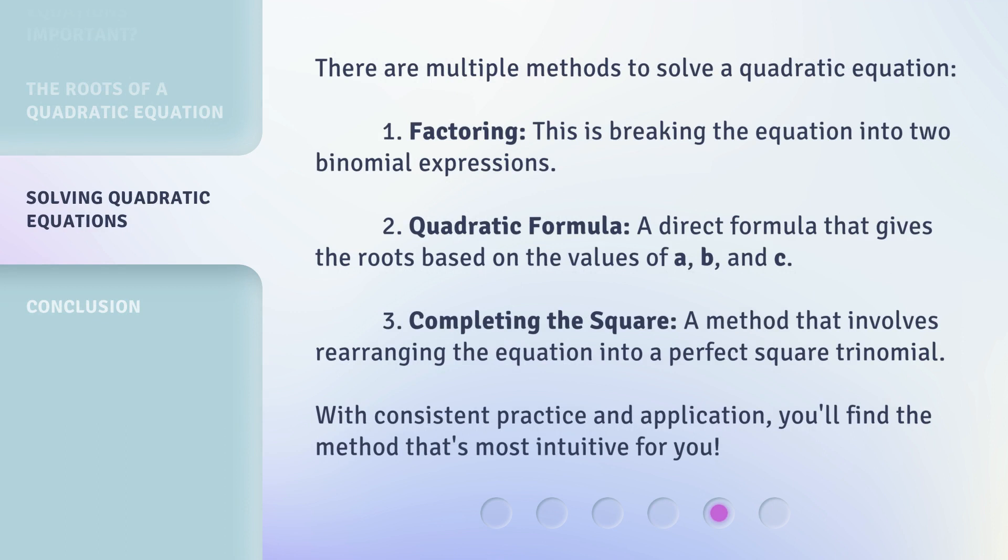There are multiple methods to solve a quadratic equation. 1. Factoring: This is breaking the equation into two binomial expressions. 2. Quadratic formula: A direct formula that gives the roots based on the values of a, b, and c. 3. Completing the square: A method that involves rearranging the equation into a perfect square trinomial.